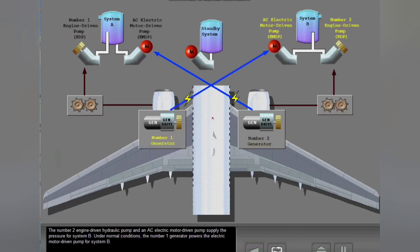The number two engine driven hydraulic pump and an AC electric motor driven pump supply the pressure for System B. Under normal conditions, the number one generator powers the electric motor driven pump for System B.